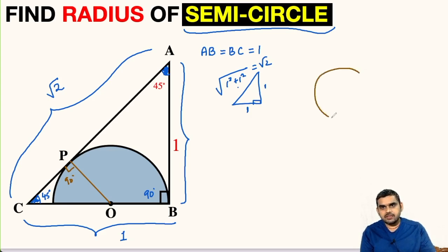Recall that we have a theorem in circles. If we have a circle and this is the center, and if this is a tangent and this is the point of contact, if we join these two points, the center and point of contact, then these two lines will be perpendicular to each other. So using that theorem, we get OP is perpendicular to AC.